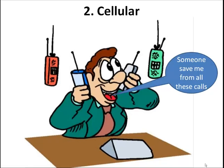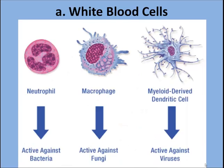Another line of defense is cellular — the second line of defense. With cellular defense, we have white blood cells, and among those white blood cells we have several different kinds that fight against bacteria, fungi, and viruses. It's a very complex process, all these white blood cells.